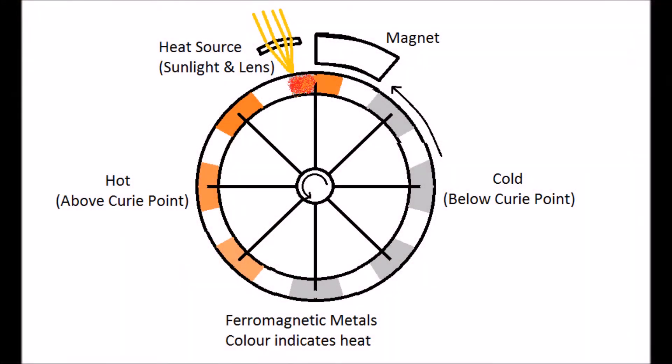For example, a solar power device could heat up a strip of metal attached to a wheel. As one section heats up, it will lose its magnetic properties and the following section is attracted to the magnets, pulling it into the heat source. This operation would continue indefinitely, provided there was a constant heat source — in this case, using a lens to focus the sunlight.